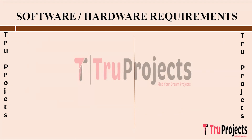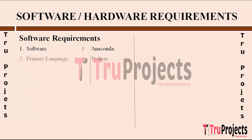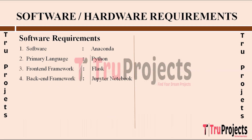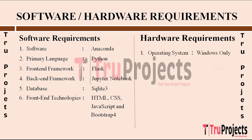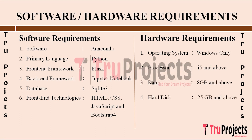The software requirements for this project include Anaconda, Python as the primary language, Flask as the front-end framework, Jupyter Notebook as the back-end framework, SQLite3 as the database, and HTML, CSS, JavaScript, and Bootstrap 4 as front-end technologies. Hardware requirements include a Windows operating system, an i5 processor or above, 8GB RAM or above, and 25GB hard disk space or above.